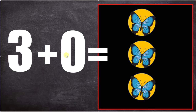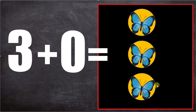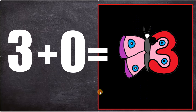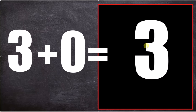Three plus zero, so we're not going to draw any more butterflies, equals. Let's count them all together. One, two, three. Three butterflies. Three plus zero equals three. Three butterflies. Three plus zero equals three.